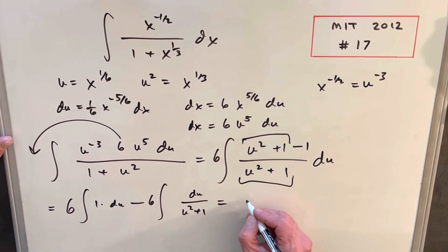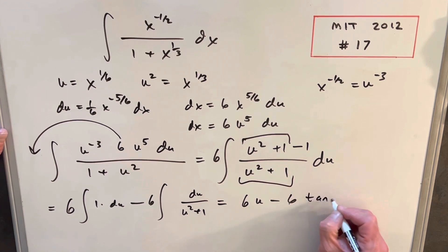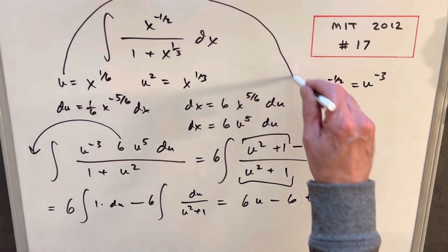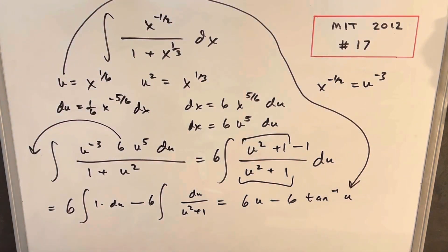And we get two very simple integrals. So integral of 1 is going to be u. Integral of this is going to be tan inverse u. Then we can just take this and back substitute. So for our final solution, we're going to have 6x to the 1 sixth minus 6 tan inverse x to the 1 sixth plus c. And that's it.